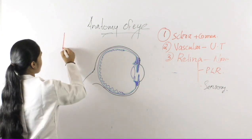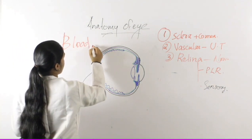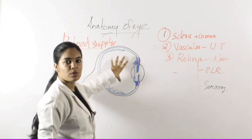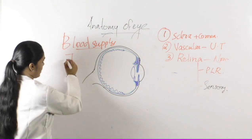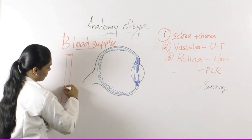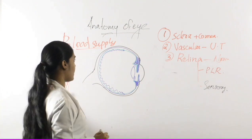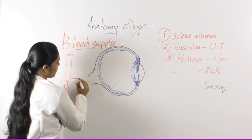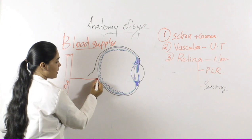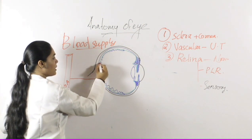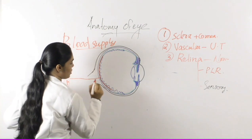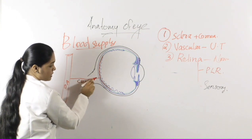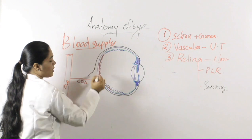Now we will study the blood supply to the eyeball. The main blood supply comes from the ophthalmic artery. One branch moves inside the optic nerve and reaches the retina to give it blood supply. Since it enters through the center of the optic nerve and supplies the retina, it is known as the central retinal artery.